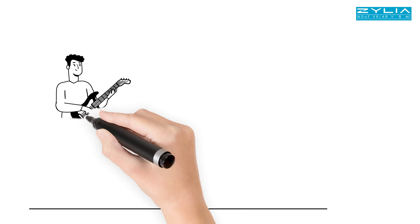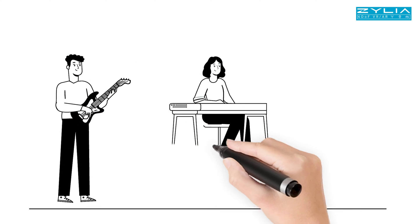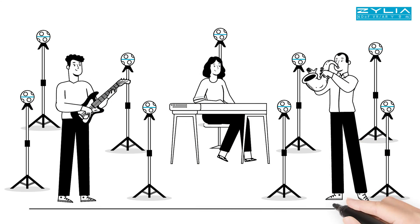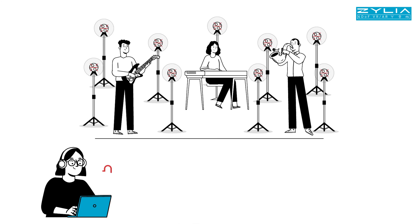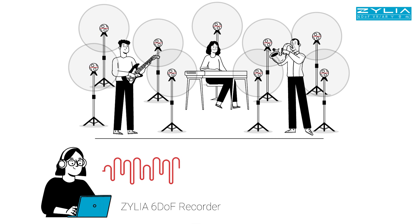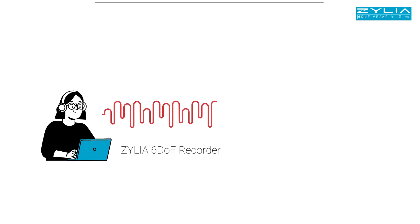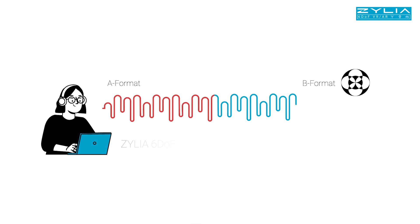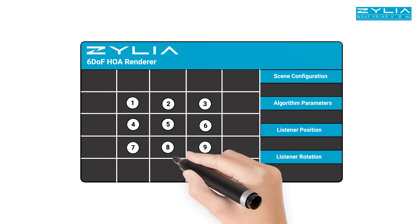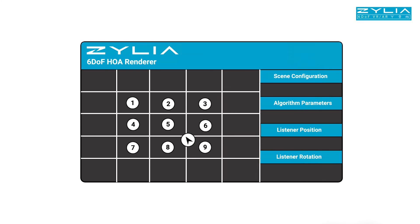How does our solution work? Set up a few Zillia ZM1S third-order ambisonics microphones around the chosen scene. Record simultaneously synchronized tracks with the Zillia 6DOF Recorder app. Convert the recorded audio from A-format to B-format ambisonics using Zillia Ambisonics Converter.